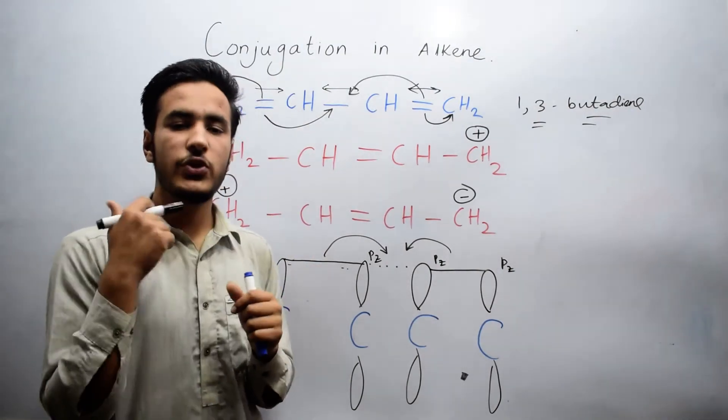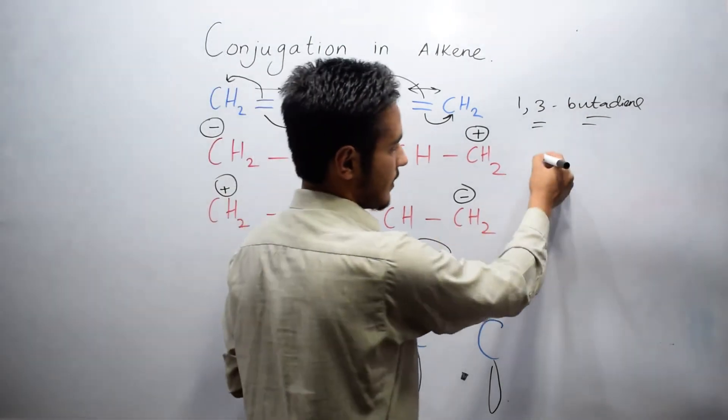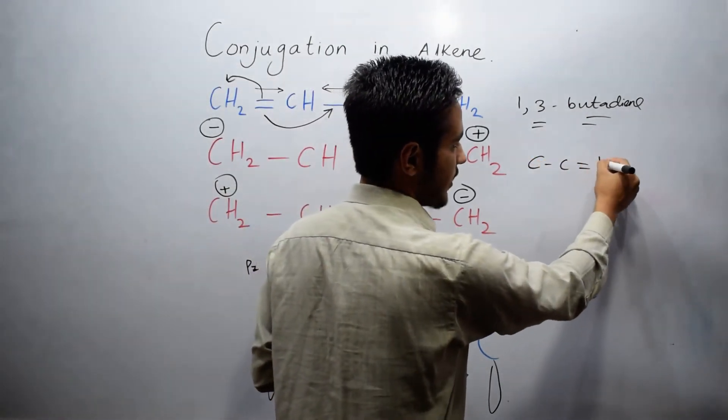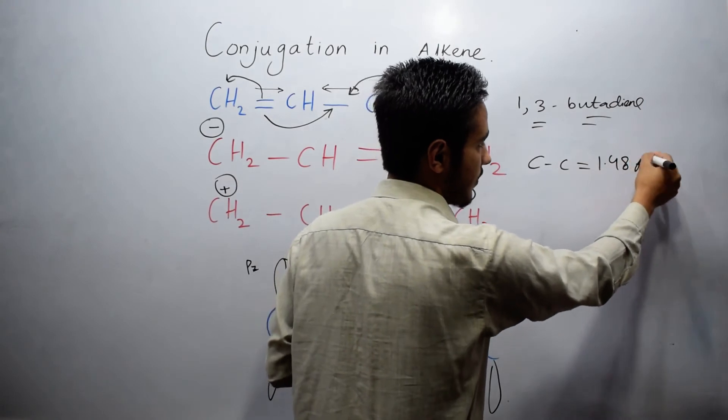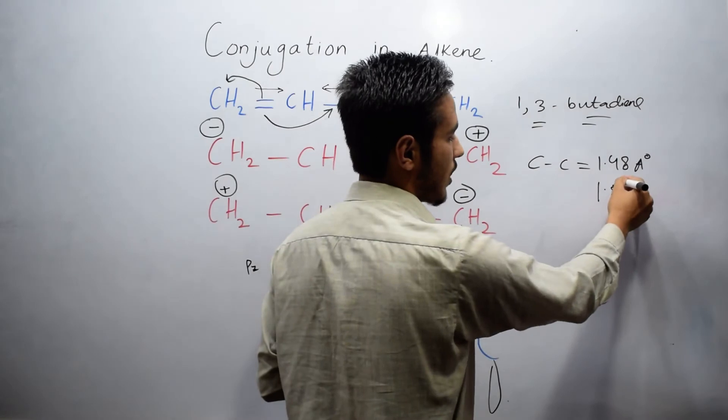Experimentally, the carbon-carbon bond length is 1.48 angstroms, which is less than the normal single bond of 1.54 angstroms.